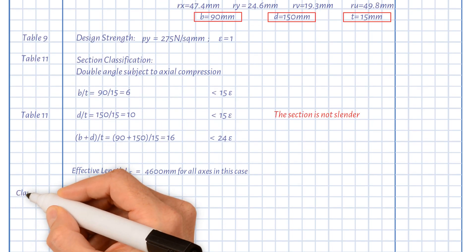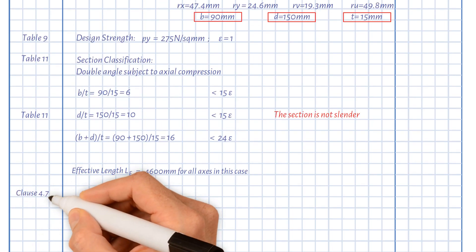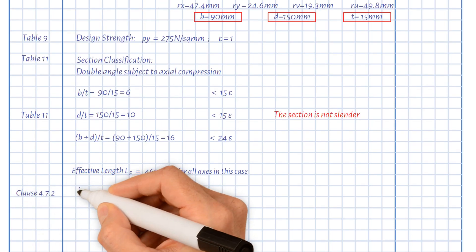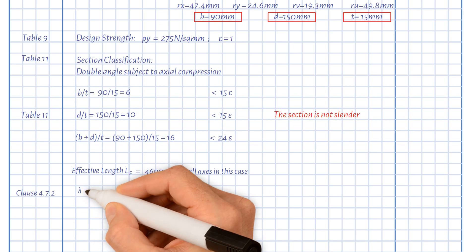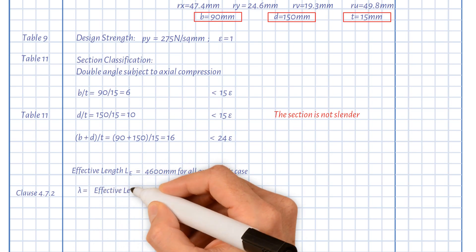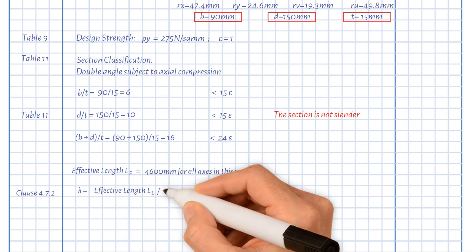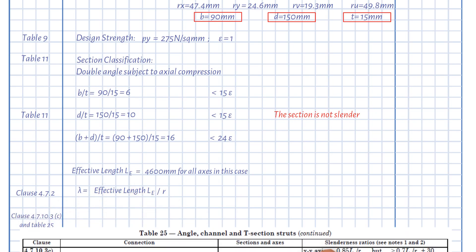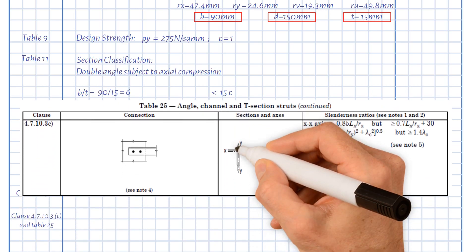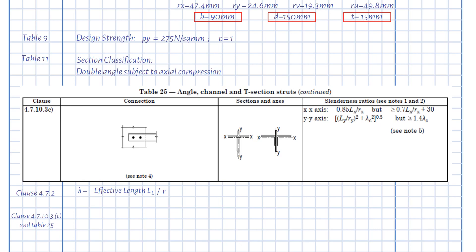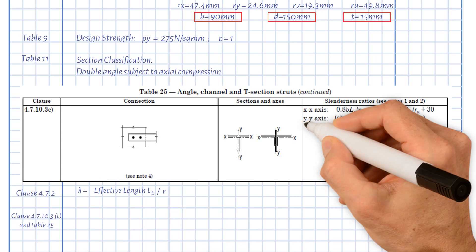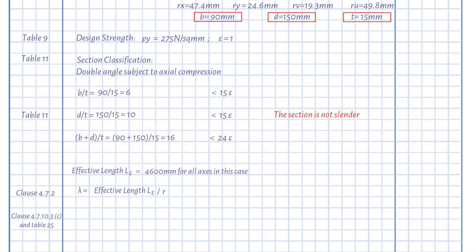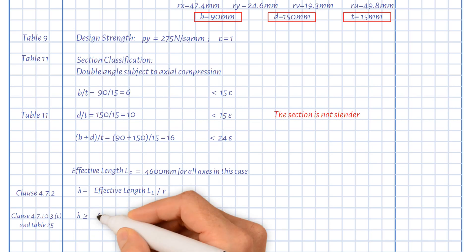Next, we need to calculate the slenderness ratios. Lambda is generally evaluated using effective length over radius of gyration. For double angles connected to both sides of a gusset or member by two or more bolts in line along each angle, the slenderness should be taken as the greater of the following.